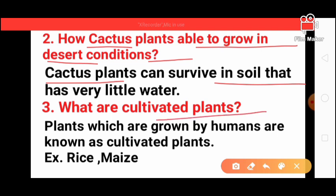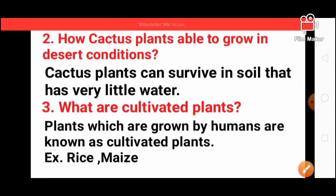What are cultivated plants? Plants which are grown by humans are known as cultivated plants. For example: rice, maize, etc.